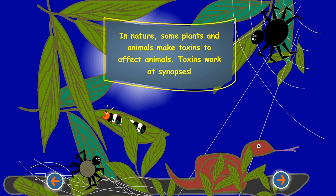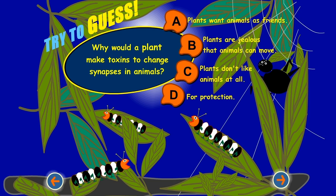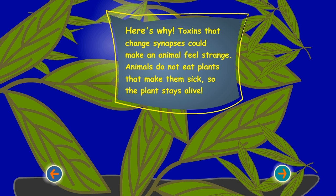In nature, some plants and animals make toxins to affect animals. Toxins work at synapses. Why would a plant make toxins to change synapses in animals? Here's why: toxins that change synapses could make an animal feel strange. Animals do not eat plants that make them sick, so the plant stays alive.